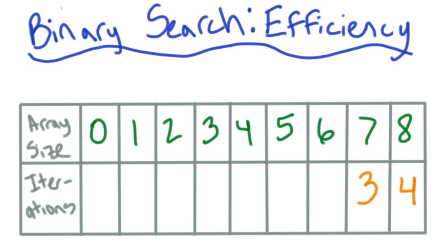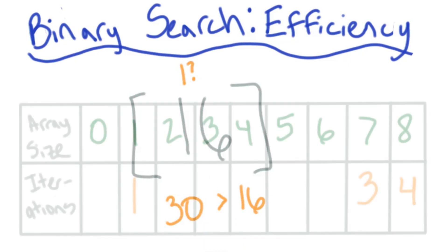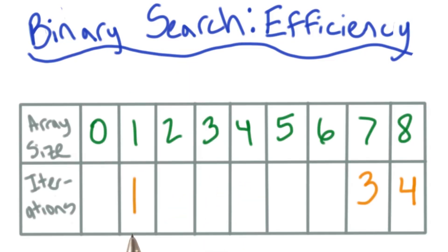Let's start thinking about different array sizes now. If you had an array size of 1 and you were looking for an element, say 30, it would always only take you one step to see whether that element was in your array or not. Great, that means we can add 1 to our table.